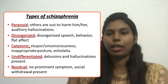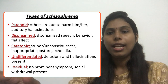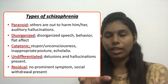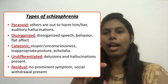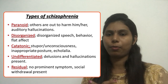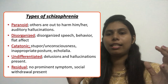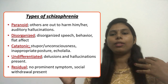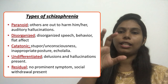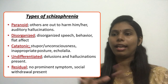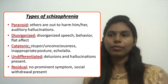Then undifferentiated schizophrenia — in undifferentiated schizophrenia, we couldn't differentiate, but the client has delusions and hallucinations present. We couldn't specifically say which kind of schizophrenia it is. In undifferentiated schizophrenia, the client always has some features of delusion and hallucinations.